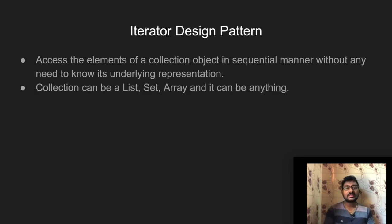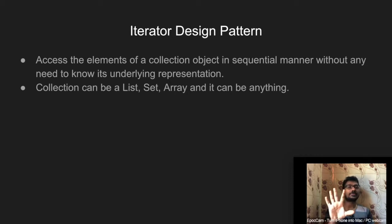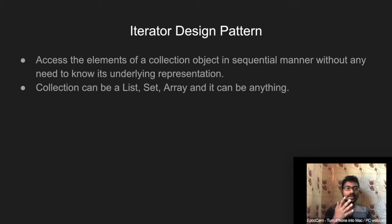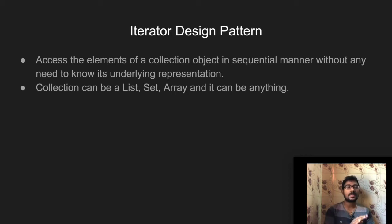The second point is that the collection can be a list, set, or anything. For example, student data in a map: student ID versus student name using LinkedHashMap — first student ID, second student ID, third student ID. Based on the use case, the collection will vary. You can use unique elements with a set, or duplicates with a list. If you want to use the iterator, it works like a black box — abstraction — so you don't need to know what is inside.